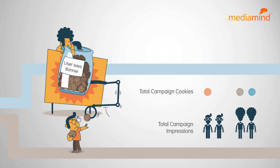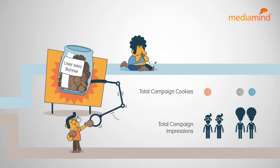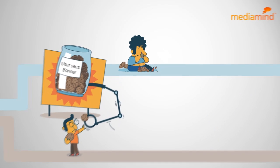And so when you calculate uniques as the number of cookies, your numbers are, well, bloated.